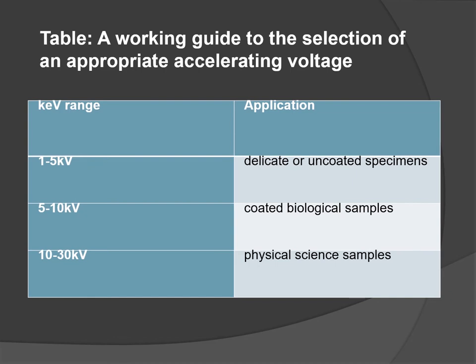Looking at a working guide for selection of appropriate accelerating voltage by keV range and application: 1–5 keV is used for delicate and uncoated specimens; 5–10 keV is mainly used for coated biological samples; and 10–30 keV is mainly used for physical or materials science samples.